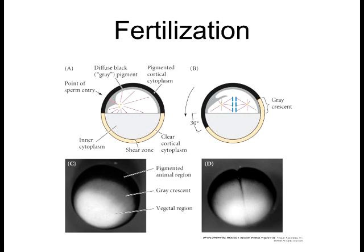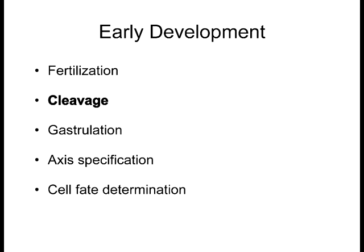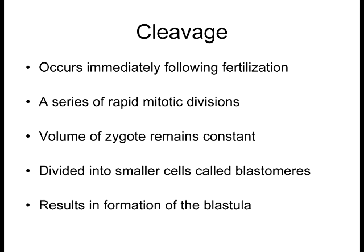This leads us to the second concept: immediately after fertilization begins, cleavage — which is essentially mitosis and cytokinesis. In some species, cleavage can occur over and over without any growth of the zygote itself. In frog embryos, you go from one large zygote to hundreds of tiny cells before any of these cells initiate the growth phases of the cell cycle. They skip G1 and G2 phases, doing only mitosis and DNA replication over and over again.